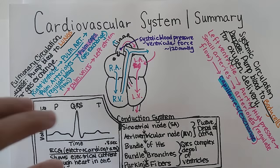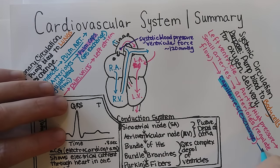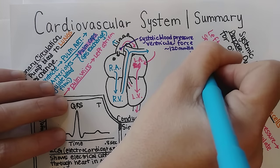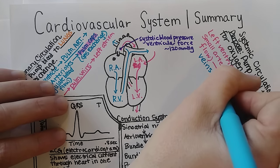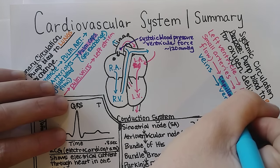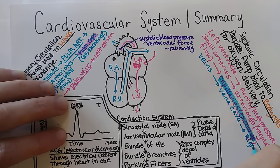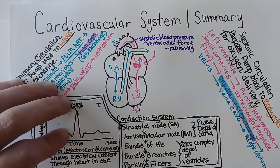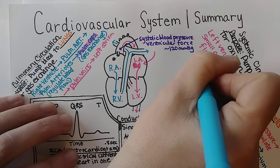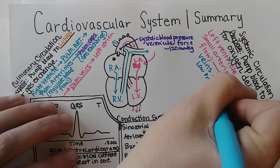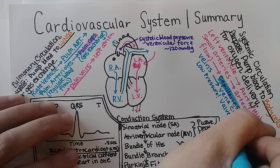Deoxygenated blood then returns to the heart via veins. Capillaries drain into progressively larger veins until reaching the vena cava — the largest vein — which dumps blood back into the right atrium, completing the systemic circulation. All veins, including the vena cava, have low pressure, and this pressure is so low that veins contain valves to prevent backflow.